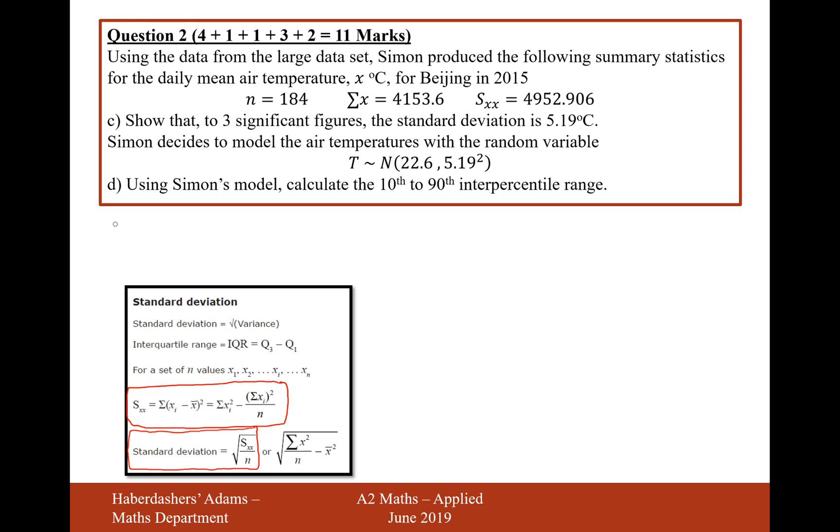So let's do that in our calculation then. So it's going to be standard deviation equals the square root of SXX over N. So that's going to be the square root of 4952.906 divided by 184.